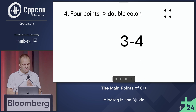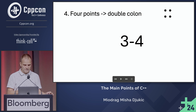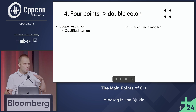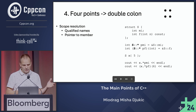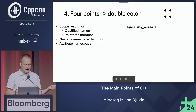The last round is four points, or a double colon. I think five seconds are enough. The most obvious one is scope resolution and qualified names — I won't provide an example for that because there are a lot of examples with namespaces and everything. A slightly special case is pointer to member — again, because of the star, I consider that to be a slightly separate case. And we have nested namespace definition. And again, attributes — although we kind of mentioned that in round two.